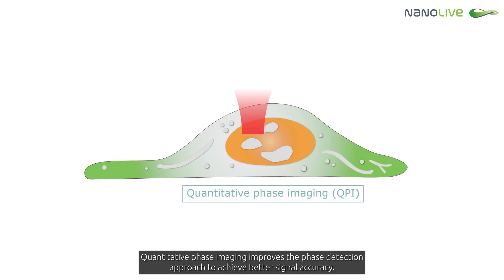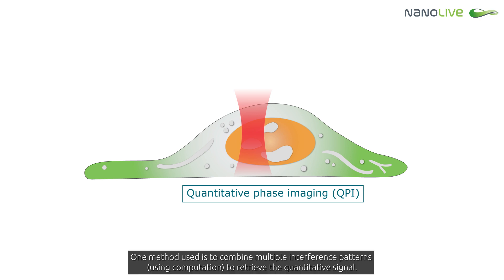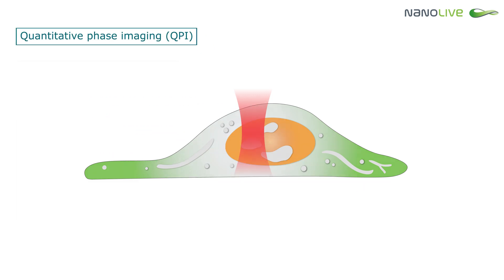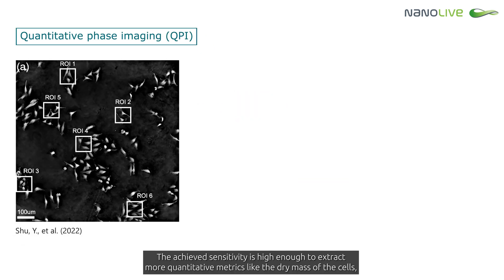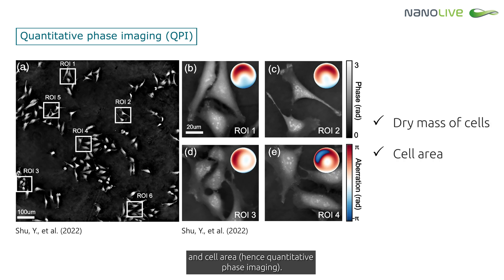Quantitative phase imaging improves the phase detection approach to achieve better signal accuracy. One method used is to combine multiple interference patterns using computation to retrieve the quantitative signal. The achieved sensitivity is high enough to extract more quantitative metrics, like the dry mass of the cells and the cell area, hence quantitative phase imaging.